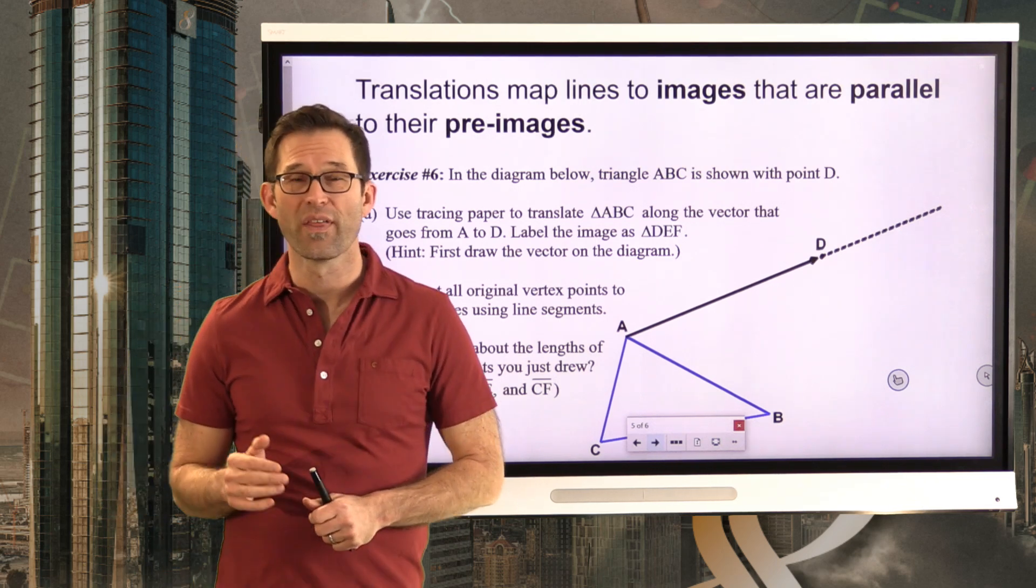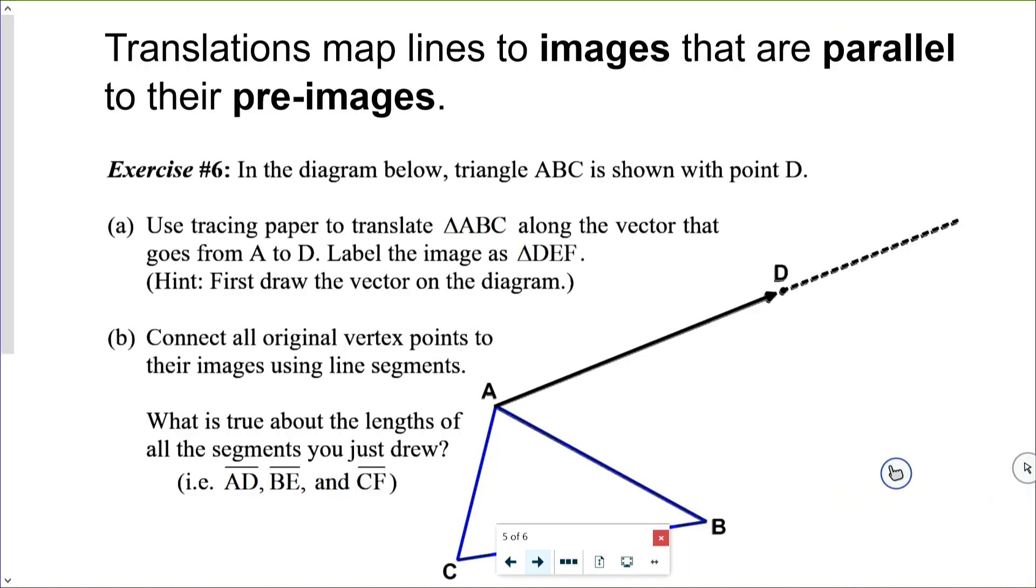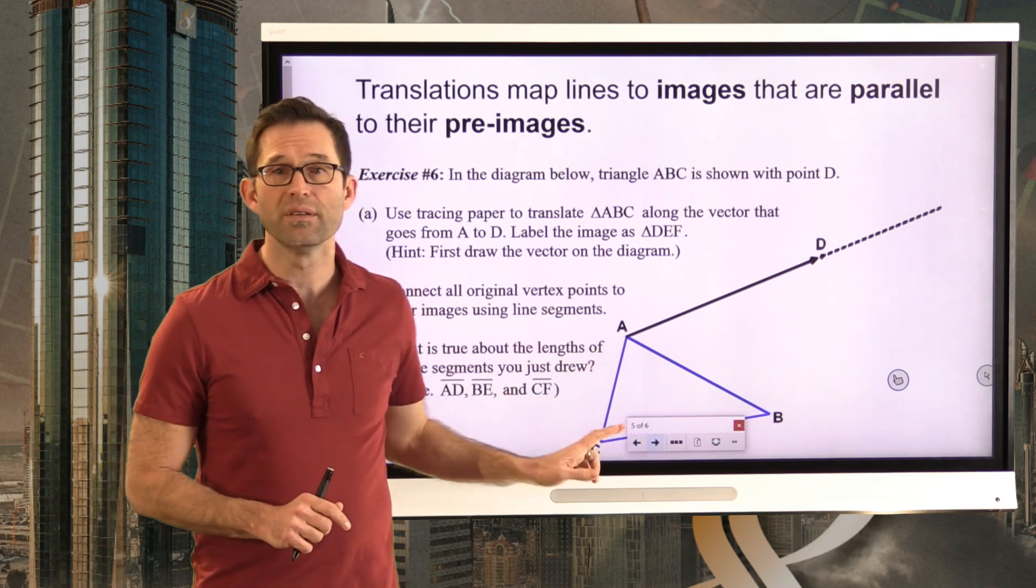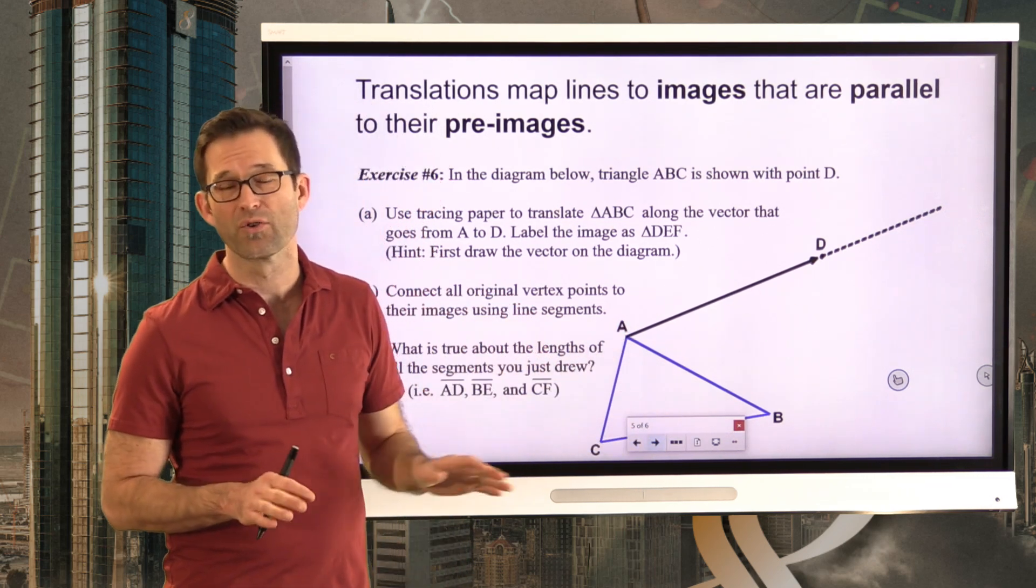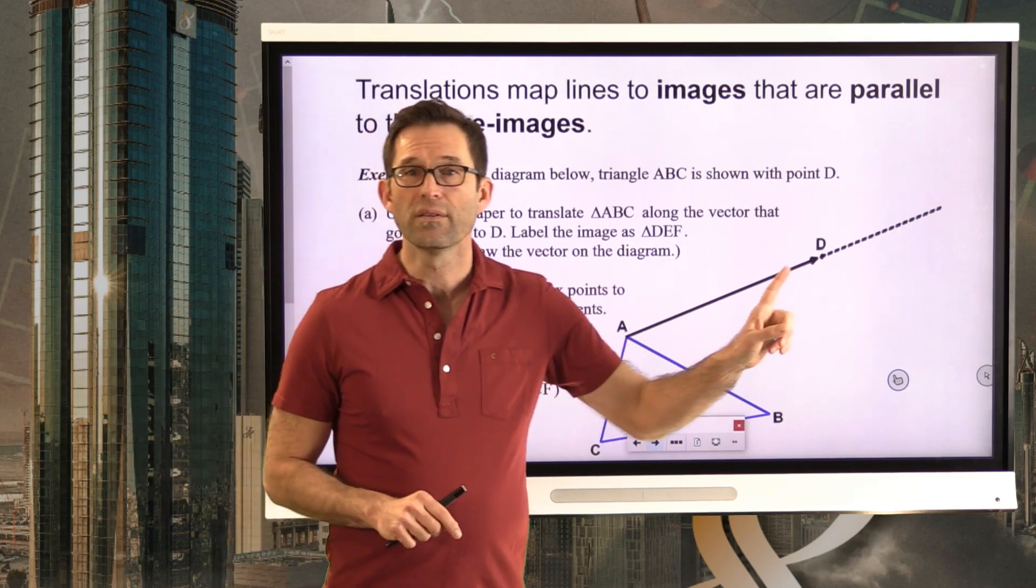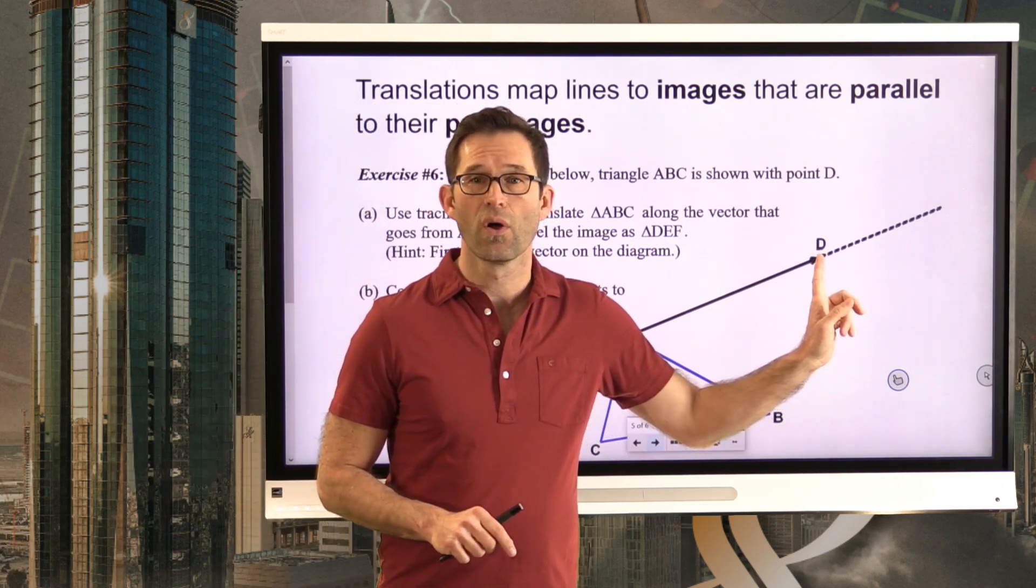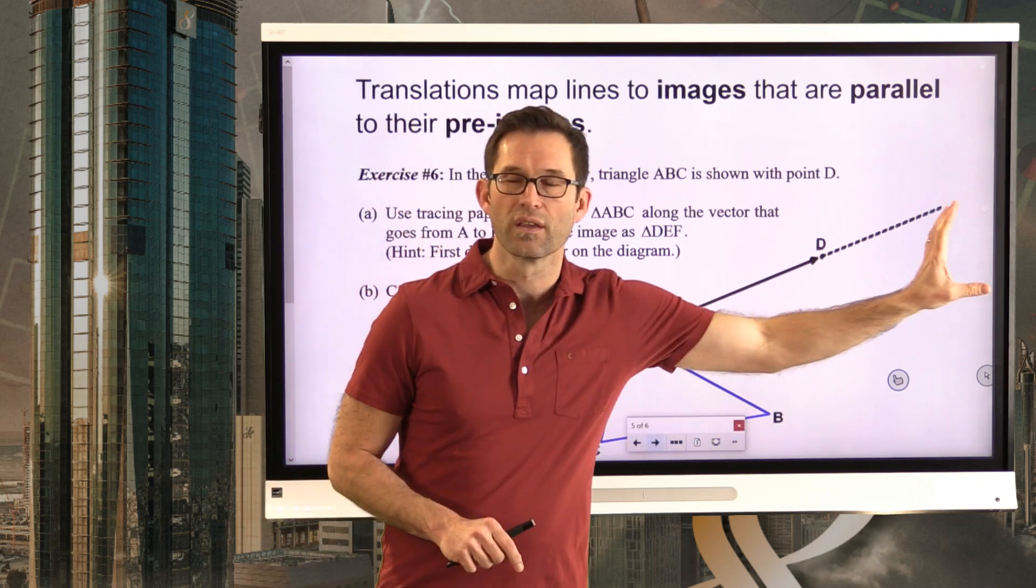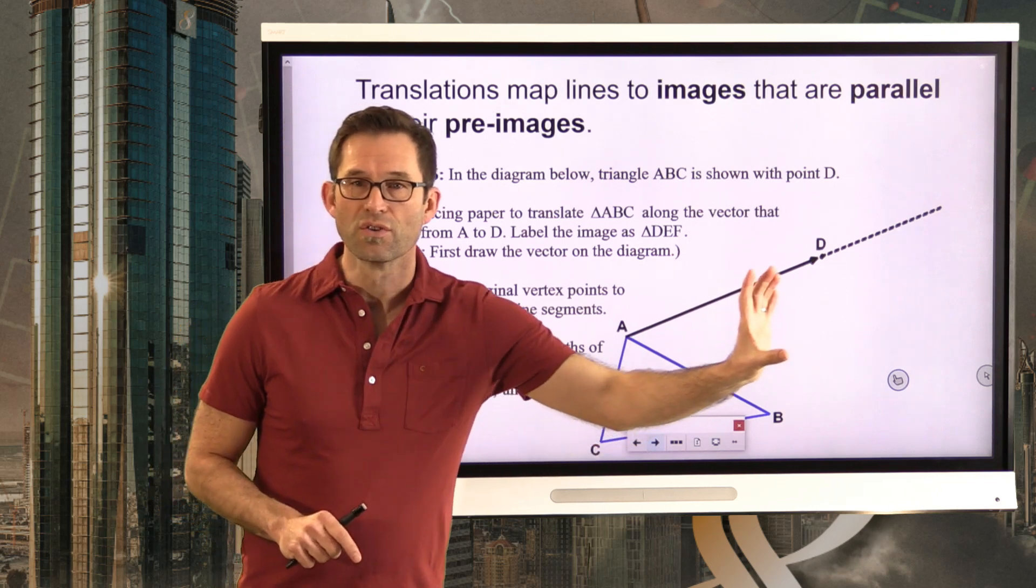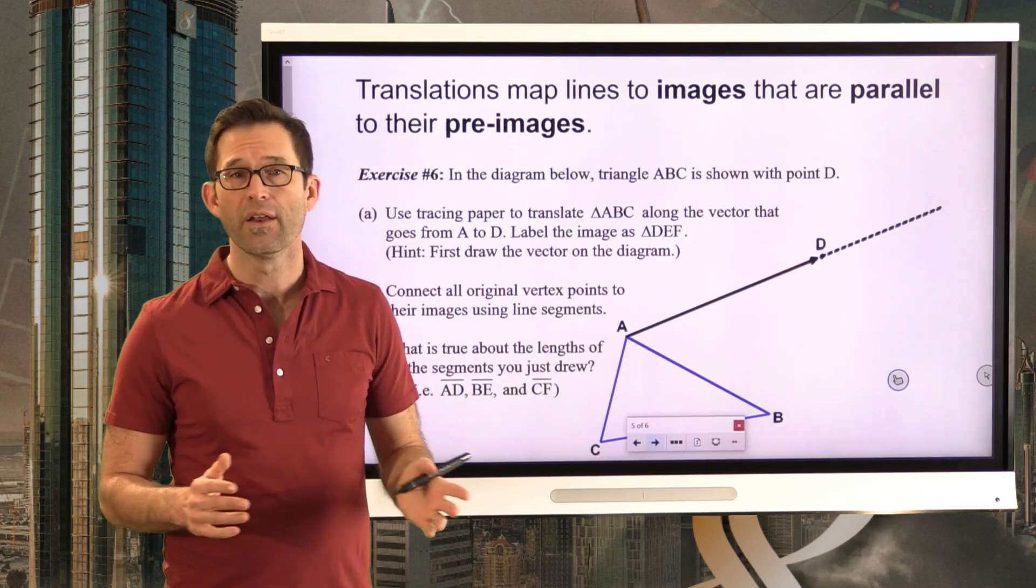And let's look at one last exercise where that kind of shows up. Exercise number six. In the diagram below, triangle ABC is shown with point D. Use tracing paper to translate ABC along the vector that goes from A to D. Label the image as triangle DEF. Hint, first draw the vector on the diagram. So look, I admit it up front. On your paper right now, you've got triangle ABC and you've got point D and that's it. So I've got a little bit extra already drawing because I didn't want to have it all kind of magically showing up. So what I want you to do, start, take your straight edge out and connect point A to point D. That's the vector you're going to be shifting all these things along. And then do a little extension so that when you actually do the shifting, you can keep it all straight and parallel to one another. Once you've got that, then use your tracing paper to shift that triangle in the direction of vector AD and draw its image. Go ahead and do that.